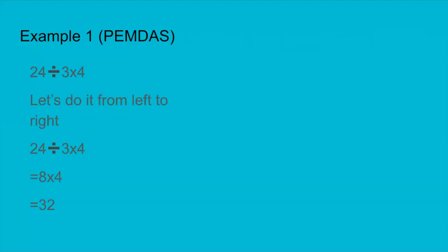Here is an example: 24 ÷ 3 × 4. According to PEMDAS, multiplication comes before division. But as mentioned, if you have both multiplication and division next to each other, you go from left to right. So we do division first: 24 ÷ 3 = 8, and 8 × 4 = 32.